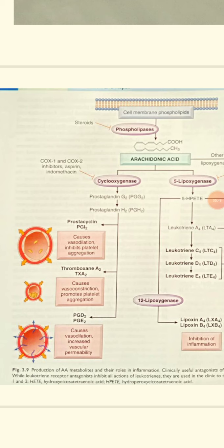PGI-2 causes vasodilation and inhibits platelet aggregation. Thromboxane A2 causes platelet aggregation and acts as a vasoconstrictor. Prostaglandins cause vasodilation and increased vascular permeability.